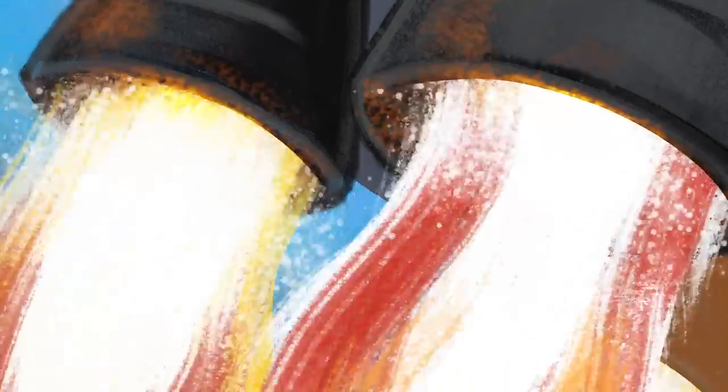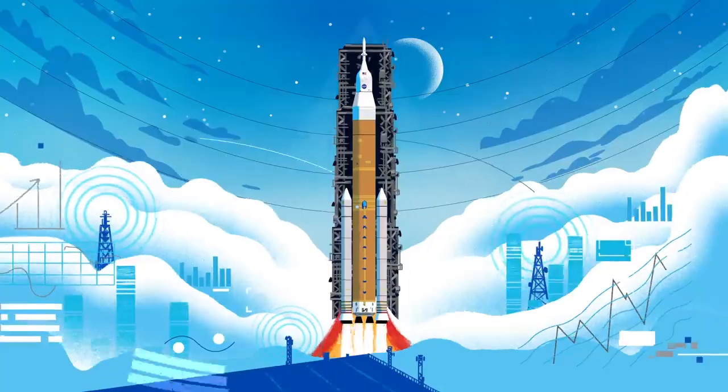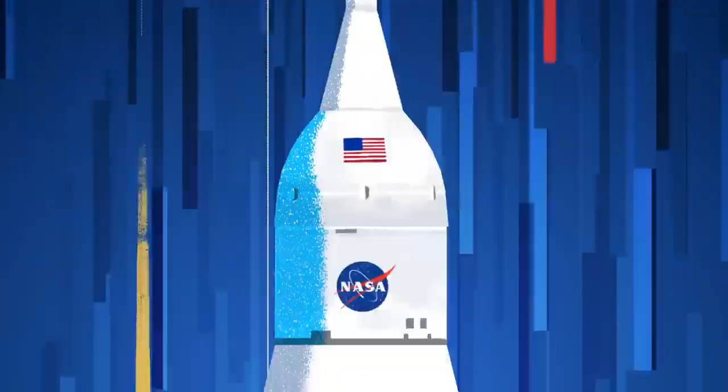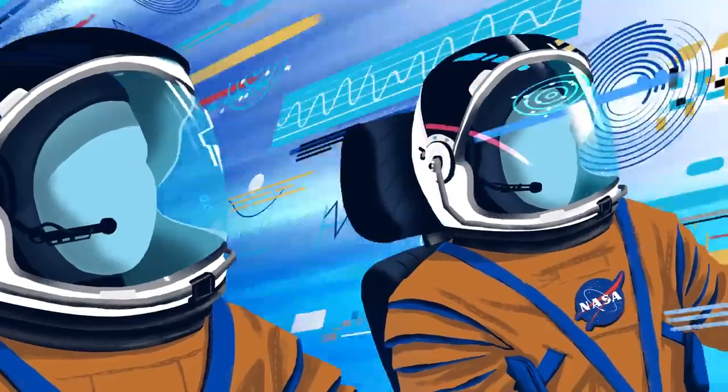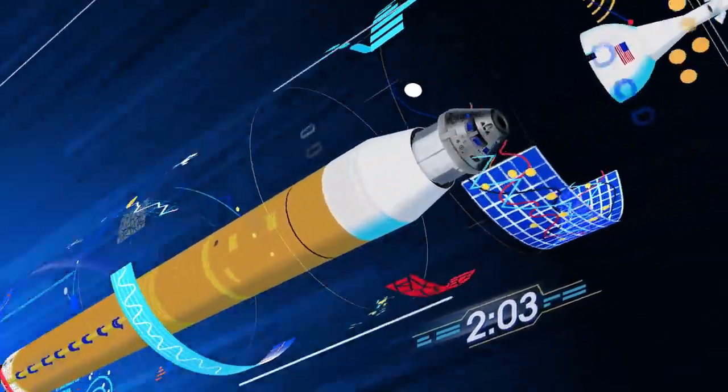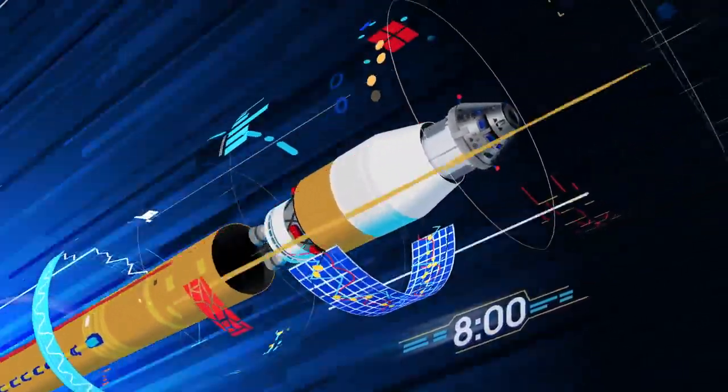Once ignited, there is no stopping what comes next. All four RS-25 engines and the two solid rocket boosters come to life thundering our crew upwards. Two minutes after ignition, the solid rocket boosters are spent and released. Eight minutes after launch, the core stage is depleted and separated.